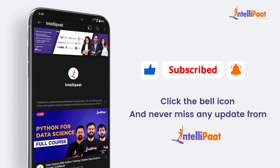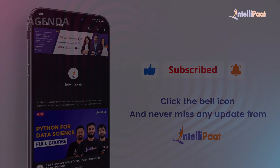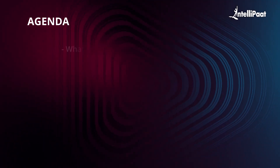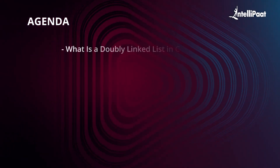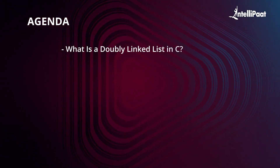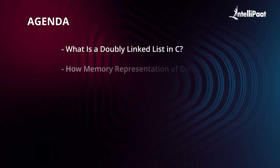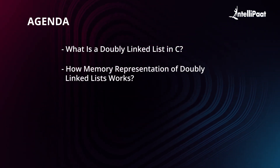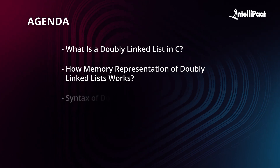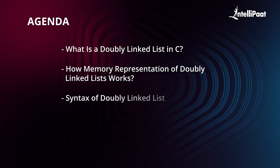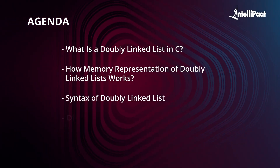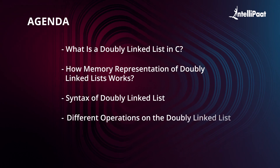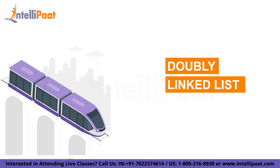Let's start with today's agenda. Our first agenda is what is doubly linked list in C. Then we'll see how memory representation of doubly linked list works. After that we will cover the syntax of doubly linked list, and finally we will discuss the different operations on doubly linked list.